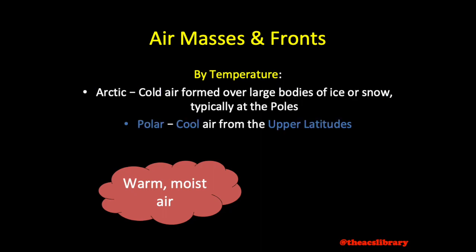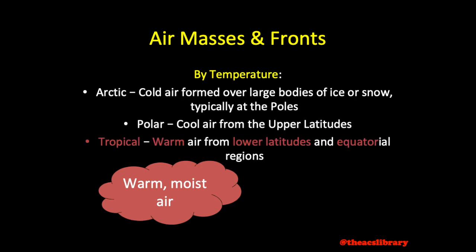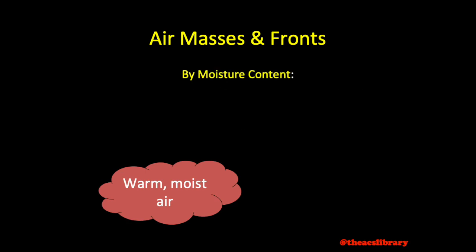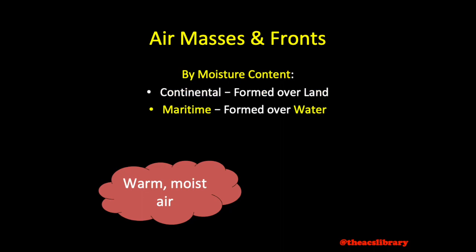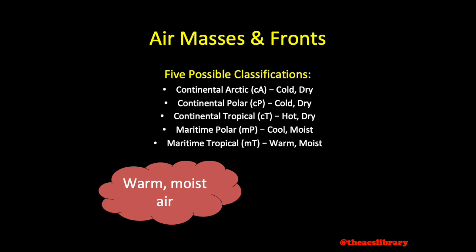A polar air mass is a cool air mass forming in the upper latitudes, and a tropical air mass is a warm or hot air mass formed in the lower latitudes and at the equator. Air masses are then grouped further into two more classes based on moisture content. Continental air masses form over land while maritime air masses form over water. When applied, the following five air masses may be identified. Maritime arctic air masses seldom if ever form. Here it seems we have a maritime tropical air mass.